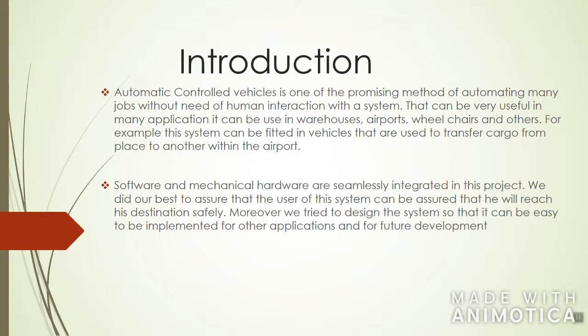Automatic controlled vehicle is one of the promising methods of automating many jobs without need of human interaction with a system that can be very useful in many applications. It can be used in warehouses, airports, wheelchairs and others. For example, the system can be fitted in vehicles that are used to transfer cargo from place to another within the airport.